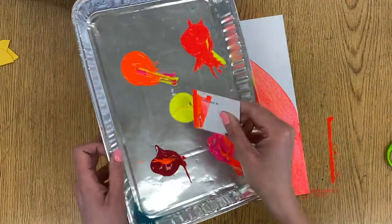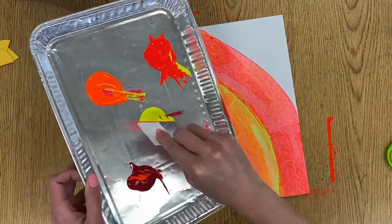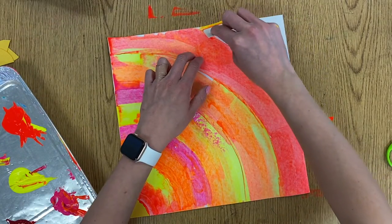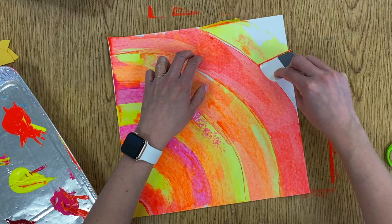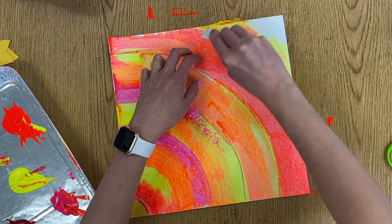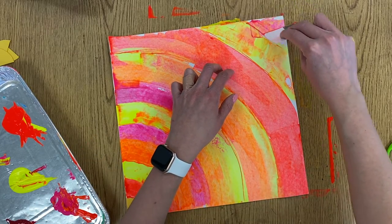And then for this triangle up in here that's left, there's a couple things you could do. You could either just take one color and kind of fill it in with your cardboard, or you could just make smaller stripes, shorter stripes in that area. So I'll just fit one and two.